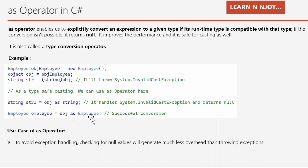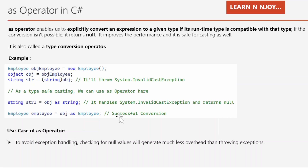If we write obj as Imply, the AS operator identifies that obj is compatible with Imply and converts it — so the Imply instance is successfully obtained. Two things to keep in mind with AS operator: first, for type-safe casting it won't throw InvalidCastException — it returns null instead. Second, checking for null values generates much less overhead than throwing an exception, making the AS operator very useful in that scenario.